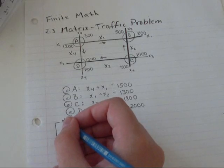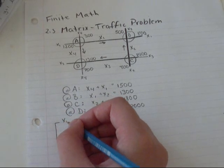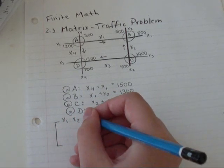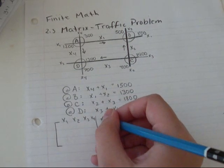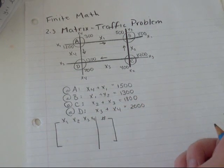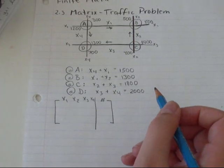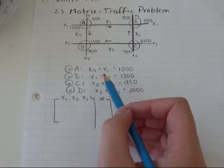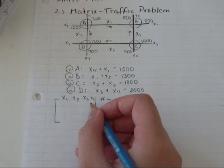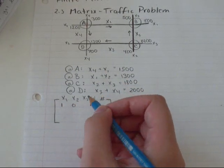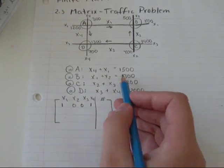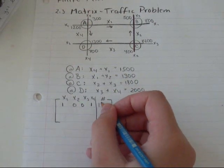So, you're going to start X1, X2, X3, X4 and then whatever your number is. To set up this matrix, in the first situation you've got one X4 plus one X1. You don't have any X2's, you don't have any X3's and that gives you 1500 cars.